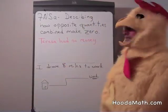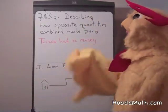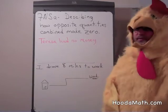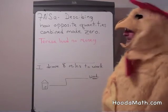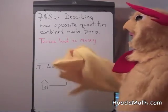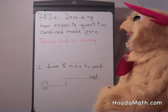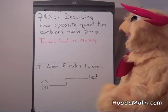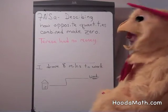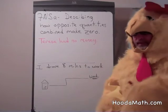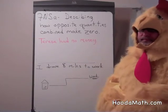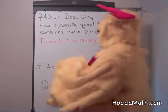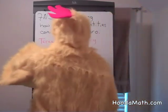We're going to describe in this lesson how opposite quantities combined make zero. Let's say we had a seventh grade girl and she had no money, but it was her birthday and she received $20.